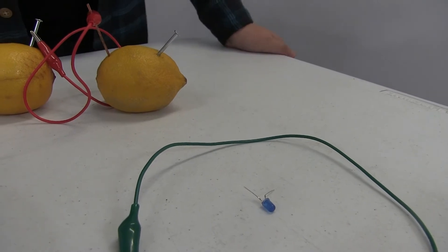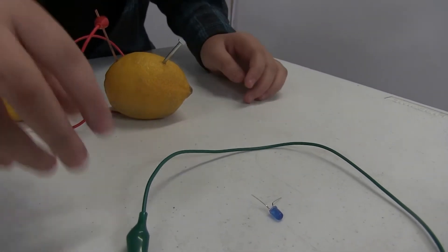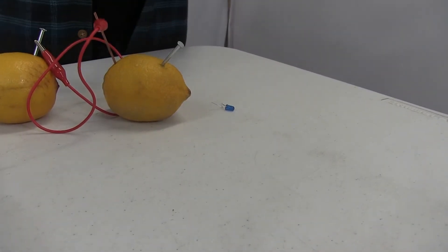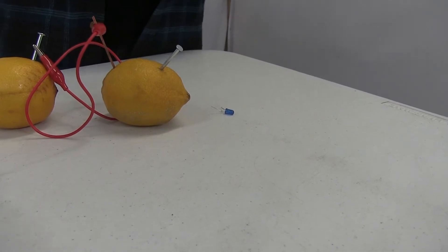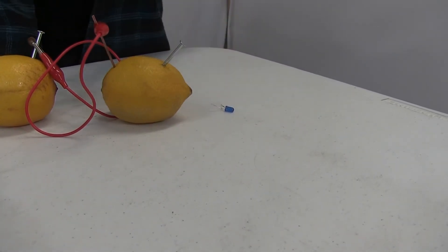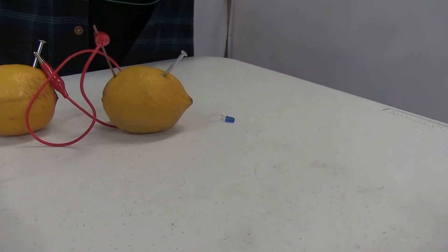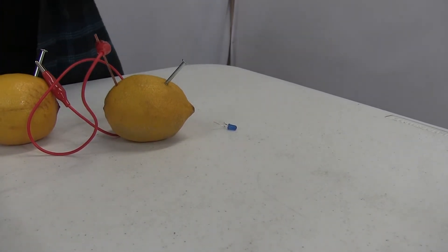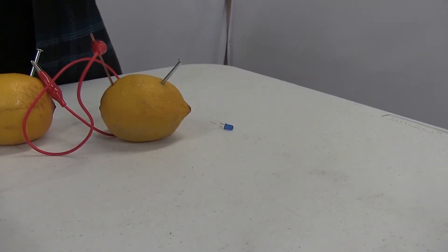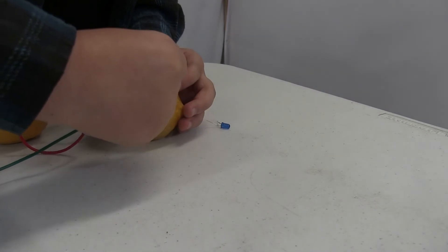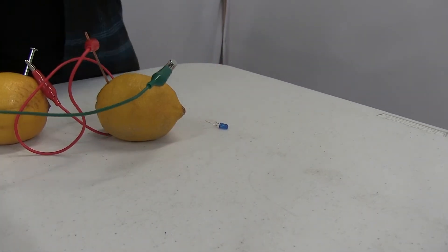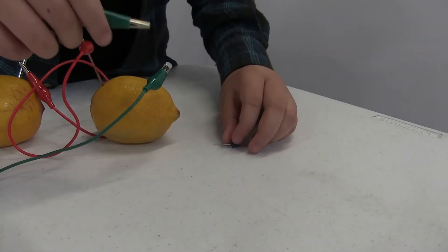So now that we have our battery source, all we have to do is since we have one more zinc nail sticking out, we're going to get one more alligator clip, or we're going to need two. But for now, for one, we're just going to attach it on, just like we did with the other ones.